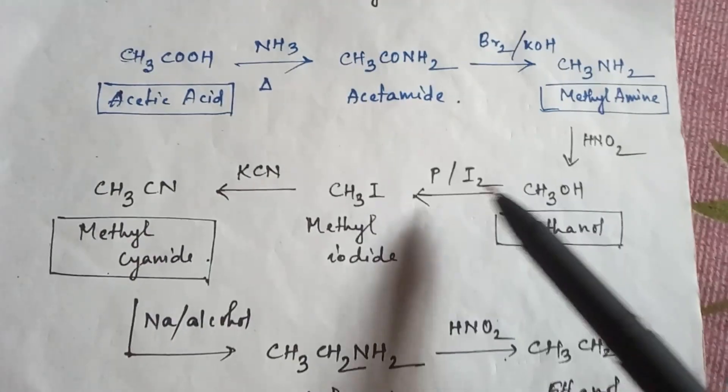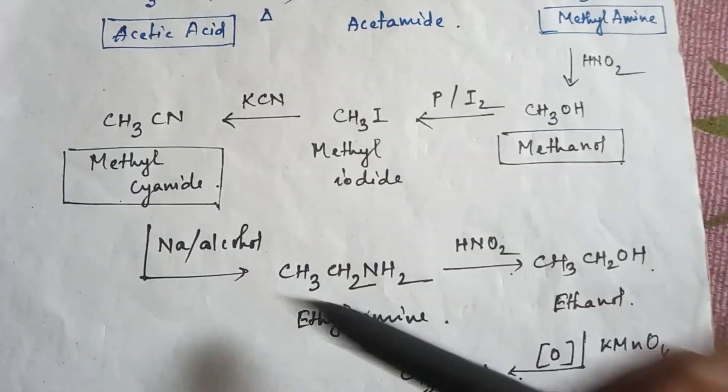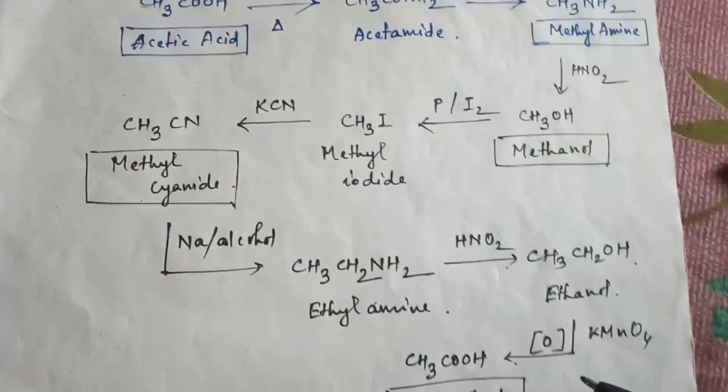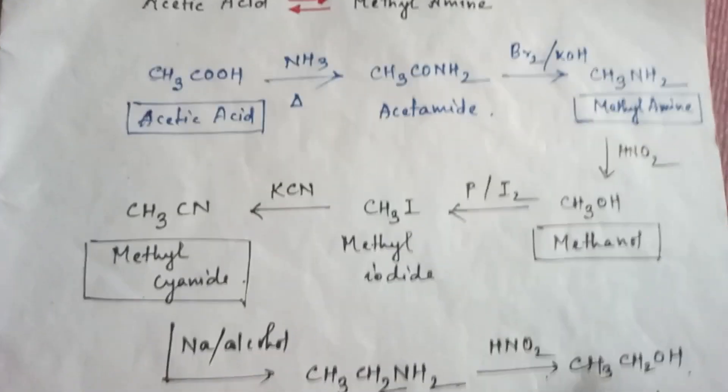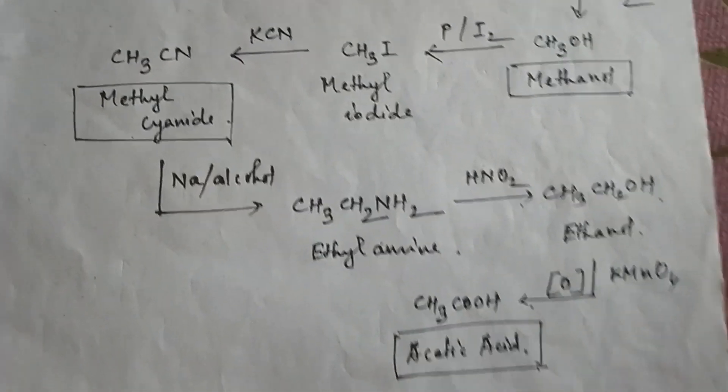So you can see from methyl amine to acetic acid this is a six-step process, and from acetic acid to methyl amine this is a two-step process.